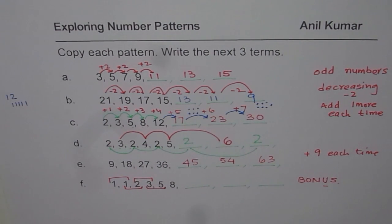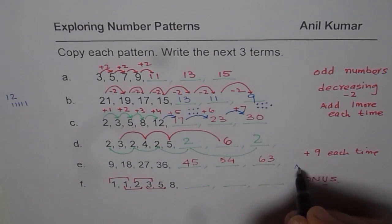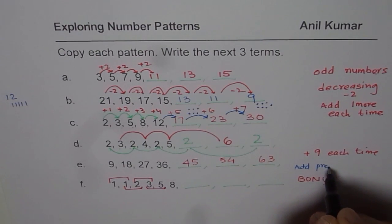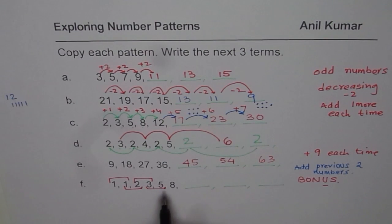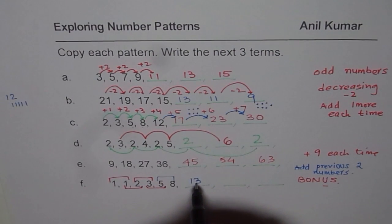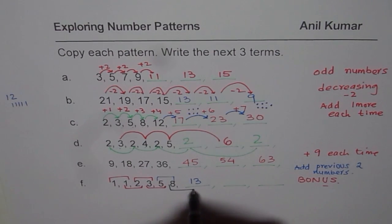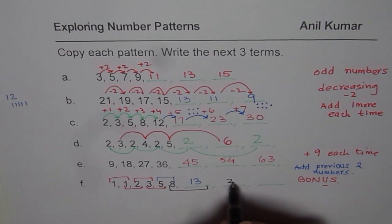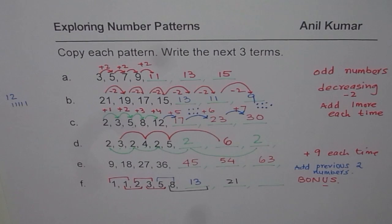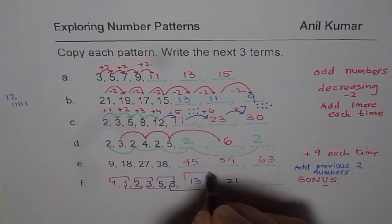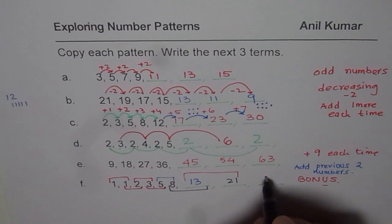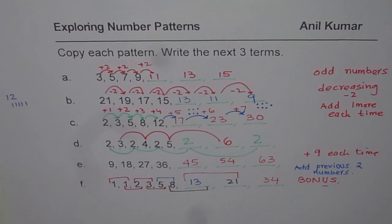So what are we doing here? Add previous 2 numbers. That is what we are doing. So to get this number, we'll add 5 and 8, which is 13. To get the next number, what am I going to do? I'm going to add 8 and 13, right? Which is 21. And the next number should be add 13 and 21, right? So get 34. That is how we get this pattern.